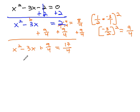Now, this equation is all set up. We've completed the square. It should factor into something squared equals 17 fourths.